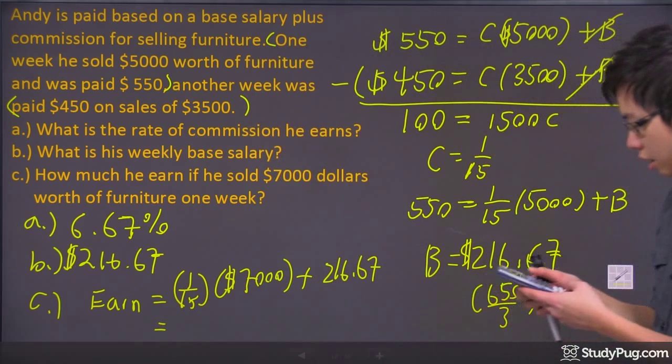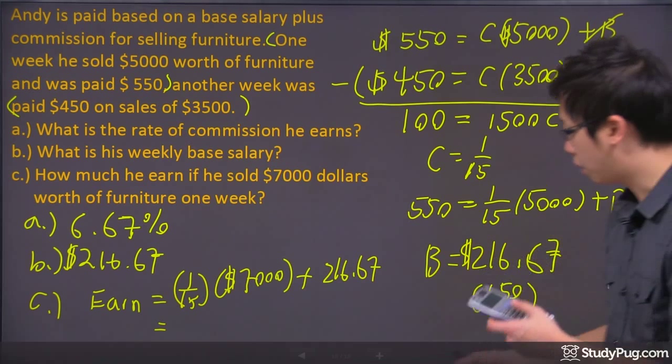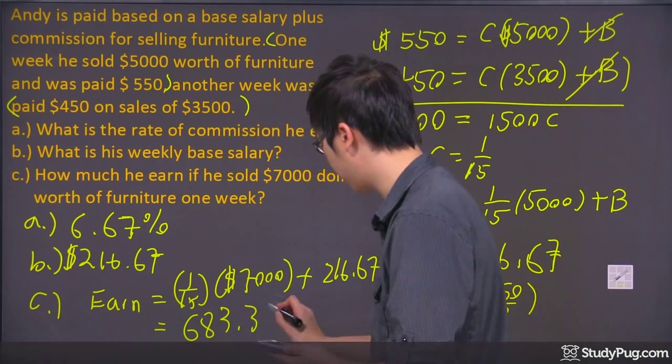And because of that, I will be taking the 1 over 15 times 7,000, plus the $216.67. And I got myself $683.34.